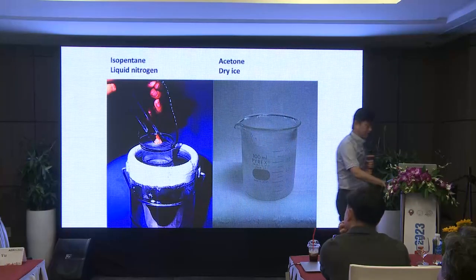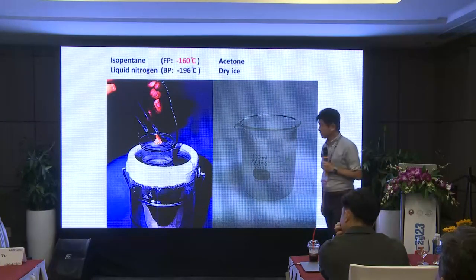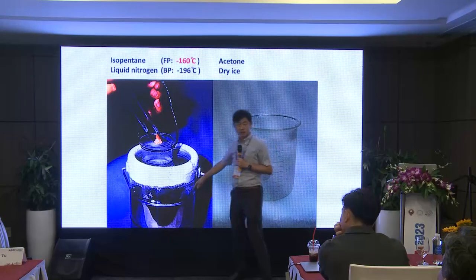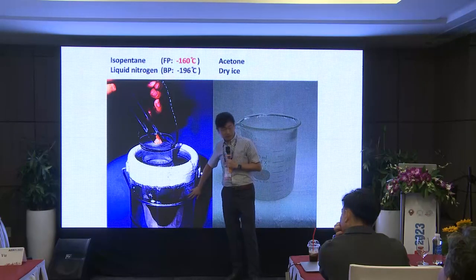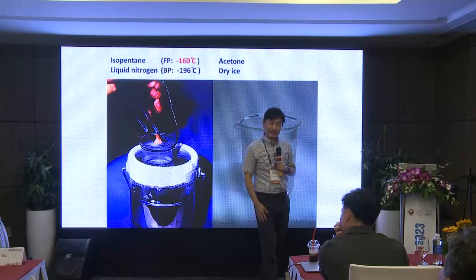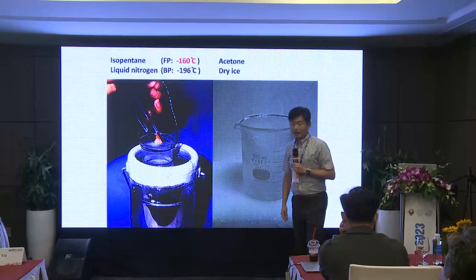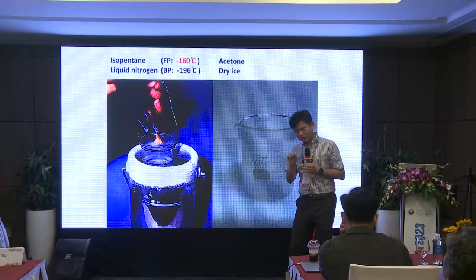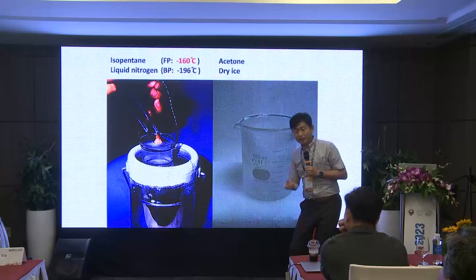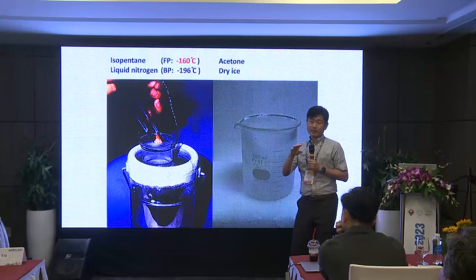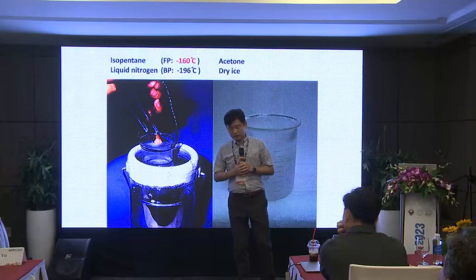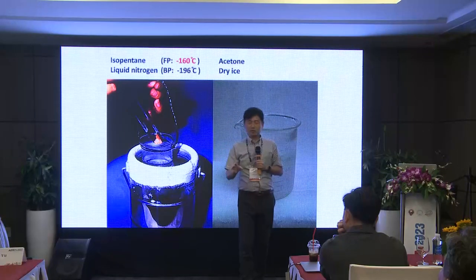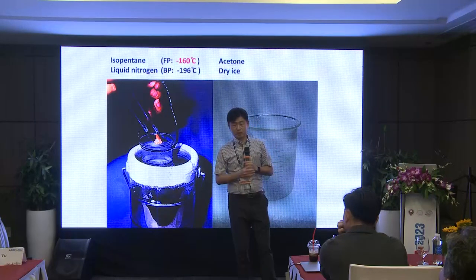Muscle should be frozen as quickly as possible at as low a temperature as possible. The practically available lowest-temperature liquid is liquid nitrogen at minus 196 degrees. You may wonder why you don't put the sample directly into liquid nitrogen — because liquid nitrogen, once it encounters something even slightly warm, quickly turns to gas. Gas does not cool material so efficiently as liquid.